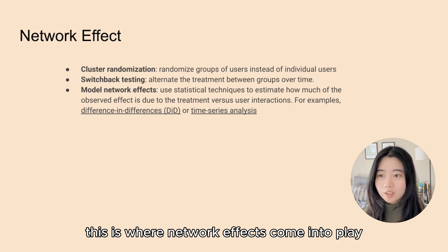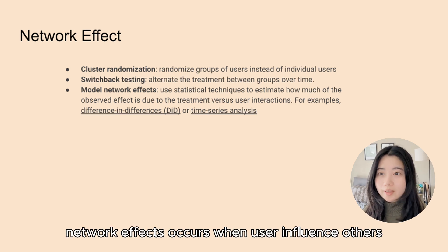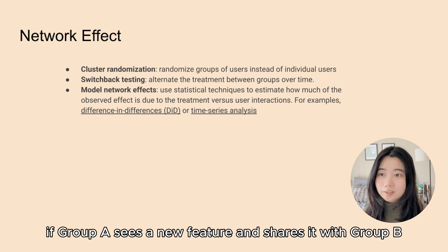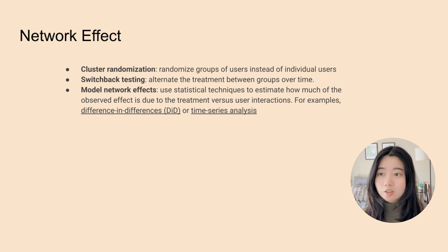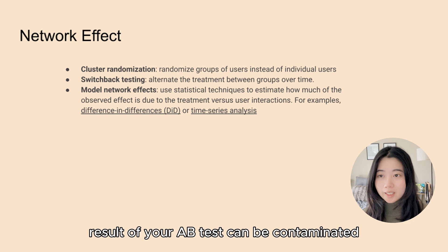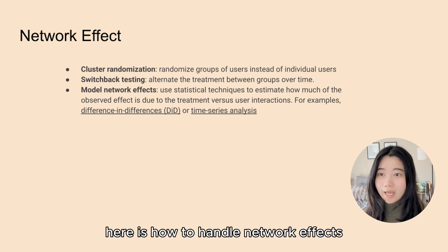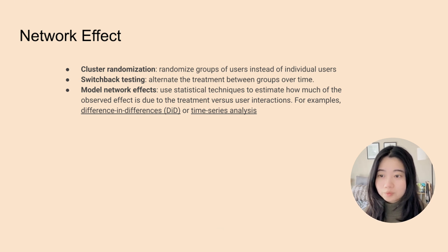This is where network effects come into play. Network effects occur when users influence each other's behavior. For example, on a social media platform, if group A sees a new feature and shares it with group B, the outcome of your A/B test can be contaminated. Here is how to handle network effects.